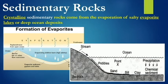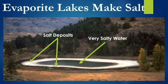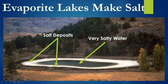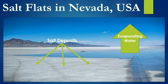Alright, the last type of sedimentary rock: crystalline sedimentary rocks, also called chemical sedimentary rocks. They typically form from evaporation. We have salty lakes or deep ocean deposits where that water evaporates. This very salty water evaporates and it leaves a ring of salt on the outside. It can also be on a salt flat — these are salt flats in Nevada where it rains very heavily and all of that water evaporates, leaving behind the salt.